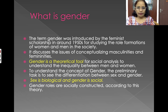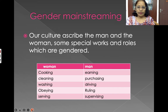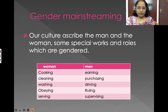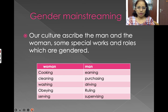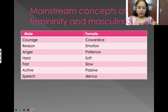To understand this social construction of gender roles, we can look at these columns. Our culture ascribes to men and women some special kinds of roles in mainstream society. If we say cooking, we suddenly connect it to woman. If we say driving or supervising, we connect it with man. This happens because of social conceptions that link particular roles to particular genders.